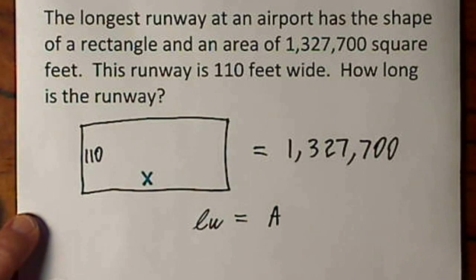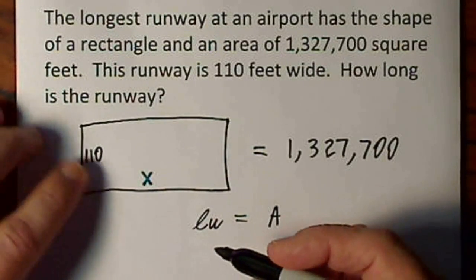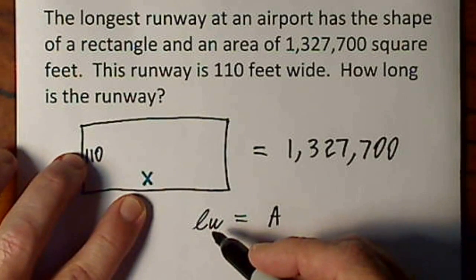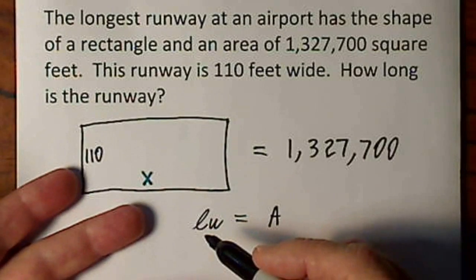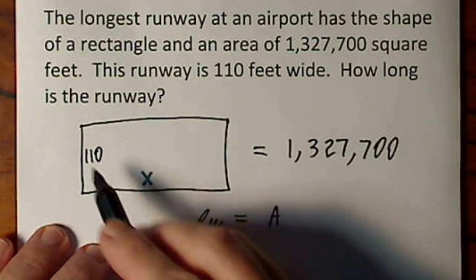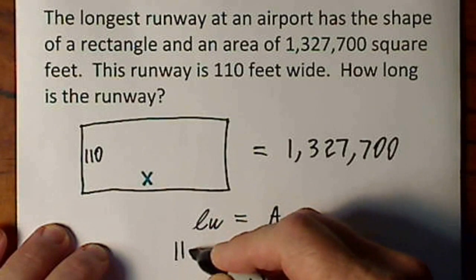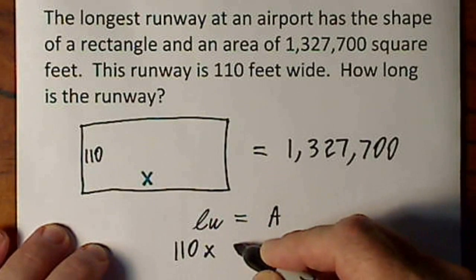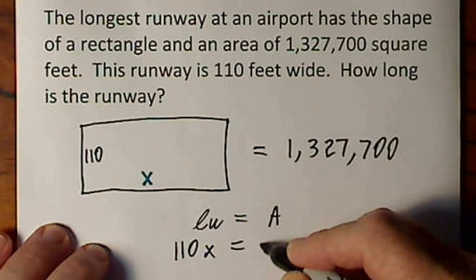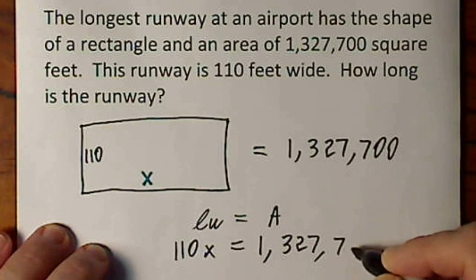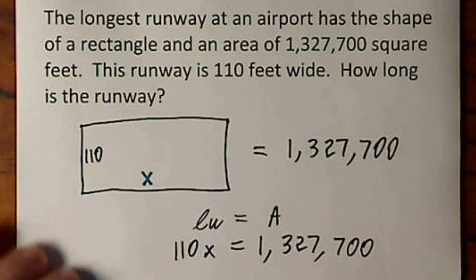Now let's see where we stand. The length is X, and the width is 110, but usually we write 110X. We usually have the coefficient in front of the variable. So I'm going to say 110X is equal to all that.